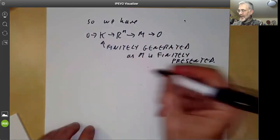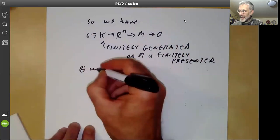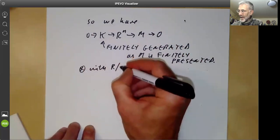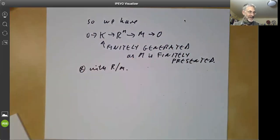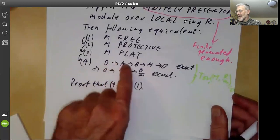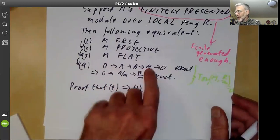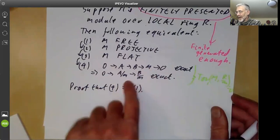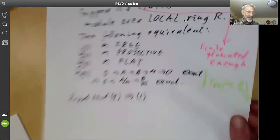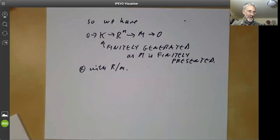So now we tensor with R over M. And this is where we use this funny condition. Condition number four says that if we've got an exact sequence and we tensor it, we're mapping onto M and we tensor it with R over M, then the result is exact. So this means that